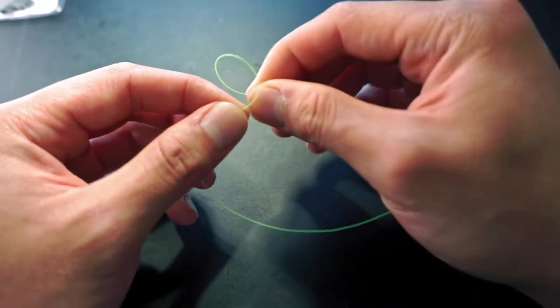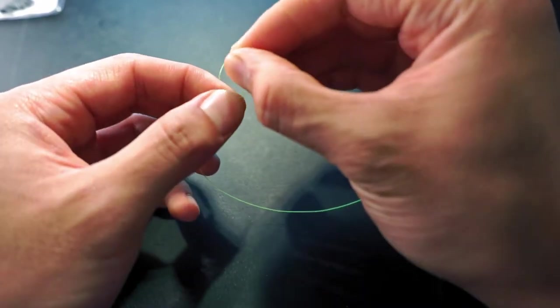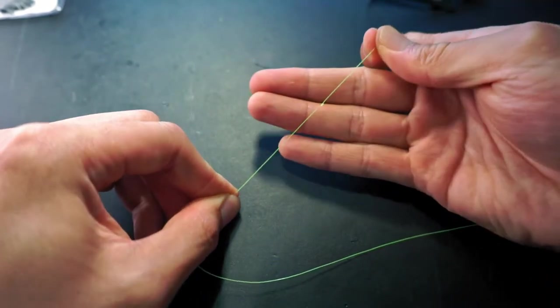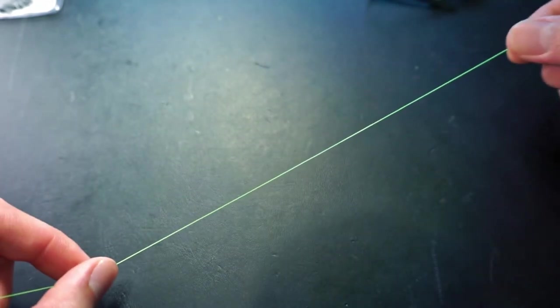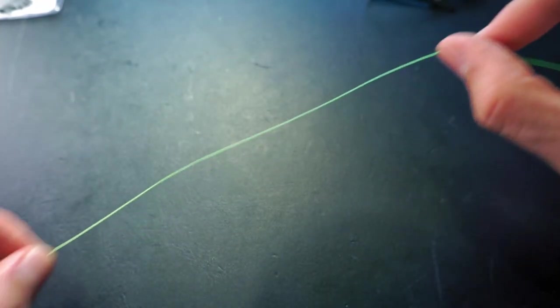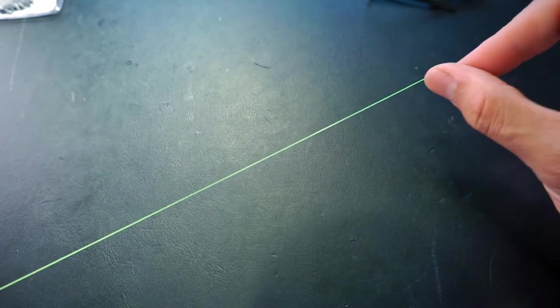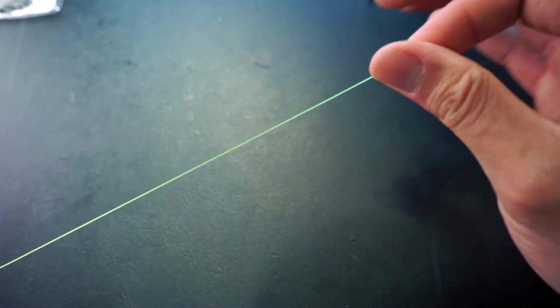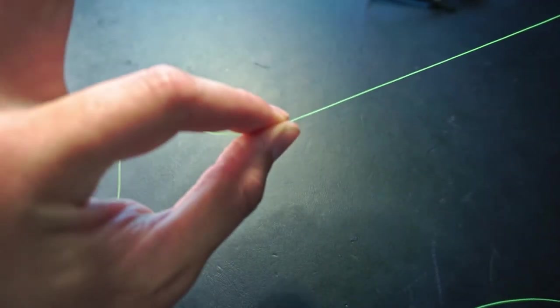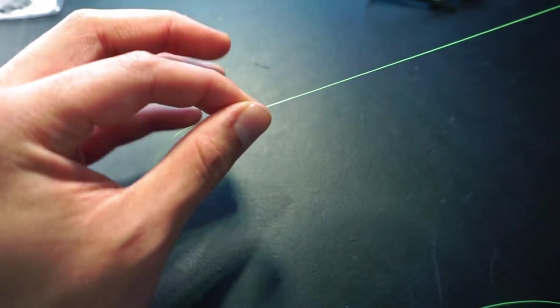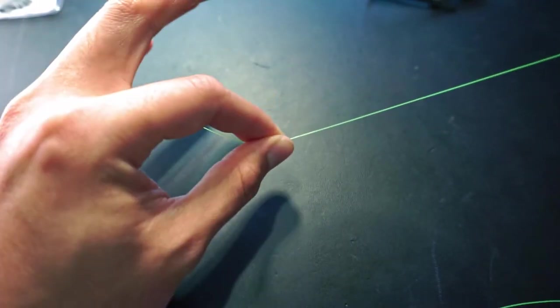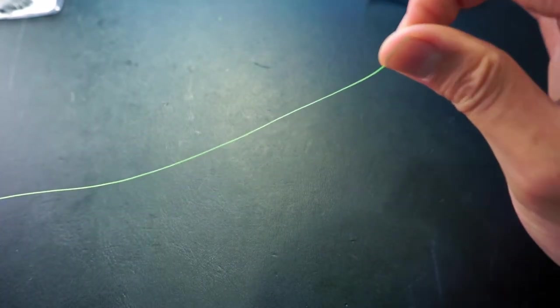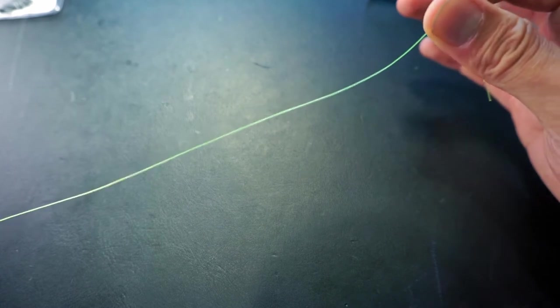Next, grab the working end and make a simple overhand knot like so. Before we continue, I just want to clarify a few things. As we work the knot, the part of the leader that you hold with your right hand is what we call a working end or a tag end, and the part that you hold with your left hand is called the standing end. As the name suggests, the standing end we're not going to do much with it. Most of the time we're going to be working with the working end or the tag end on your right hand.